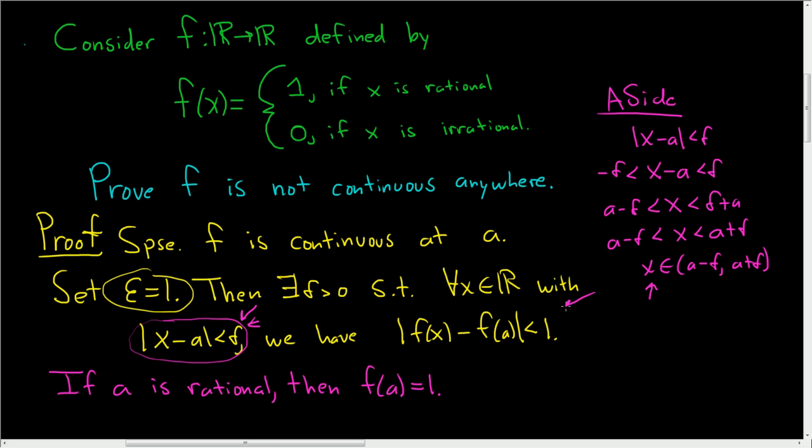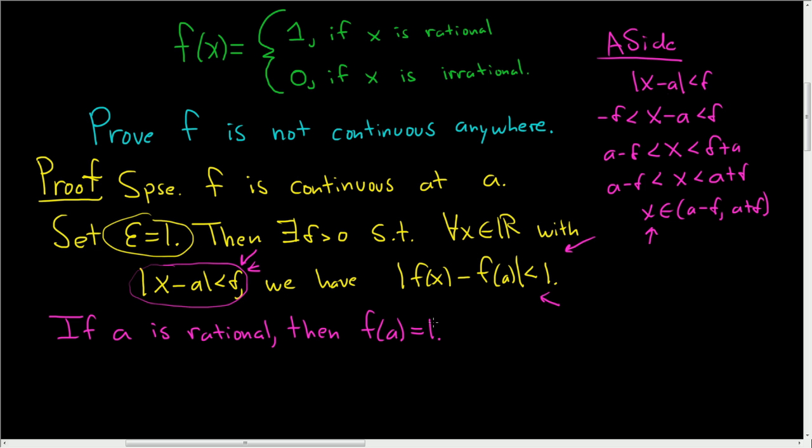That means up here in this inequality, we're going to have a 1 where the f(a) is. So it would be really nice if the f(x) was 0, and that way we could reach a contradiction. Well, we can make it 0. To make it 0, we want x to be irrational. So by the density of the irrationals,